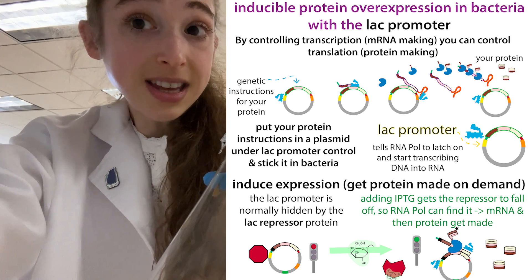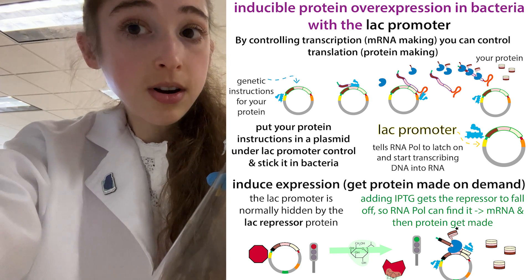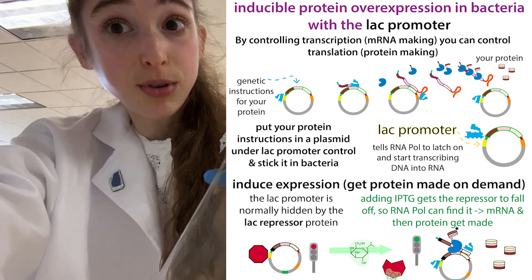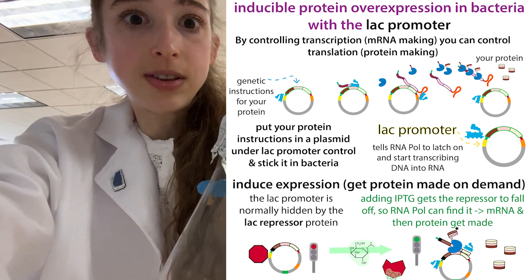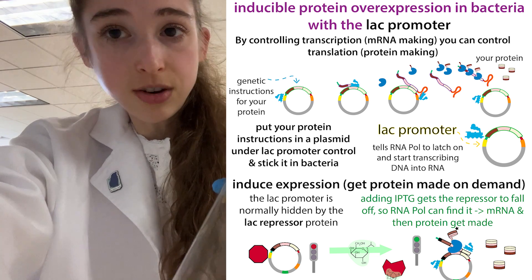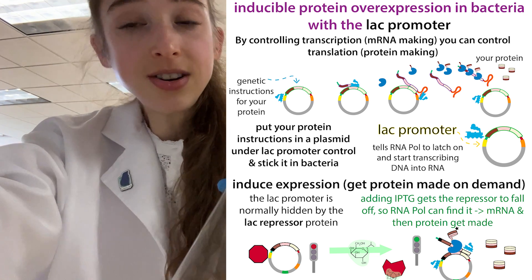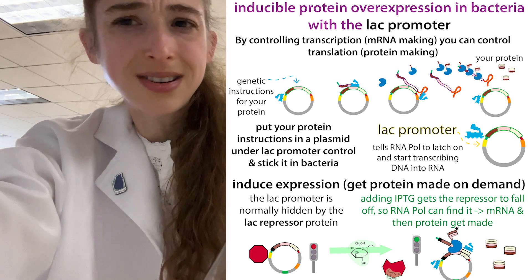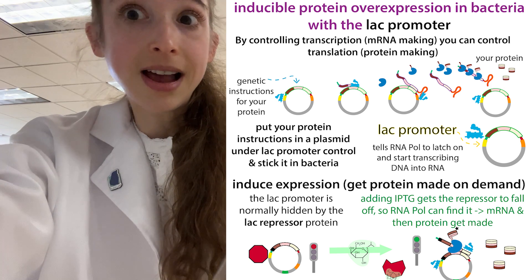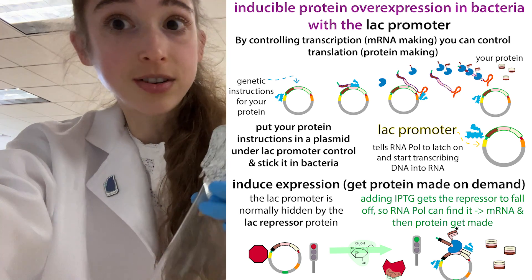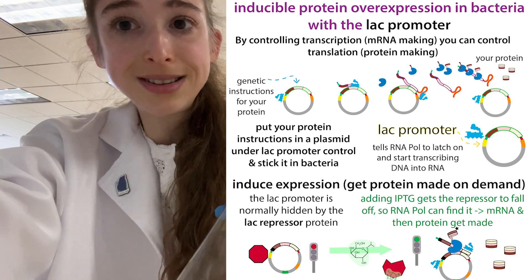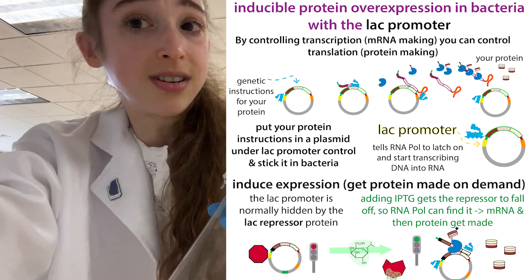So we trick the bacteria into thinking that it is. We take the lac promoter - that thing that was in front of the lac operon in front of all those lactose breakdown genes - and instead of having it in front of the lactose breakdown genes, we stick that promoter in front of our gene of interest. Now the bacteria think there's lactose around - it's actually IPTG, which fools them into thinking there's lactose around. And having the lac promoter in front of our gene fools them into thinking they're making something needed to break down lactose. And then they really go and make the messenger RNA for our protein.